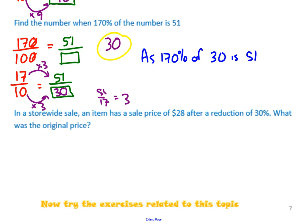In a store-wide sale, an item has a sale price of $28 after a reduction of 30%. What was the original price? This one's a little bit trickier. So we've got to think, what is the percentage? 30% doesn't represent 28. So $28 is after a reduction of 30%. So think, like, say if there was a piece of paper. If you reduced it by 30%, like if you cut this bit off, what percentage is left behind? And that's right. You would have 70% left behind.